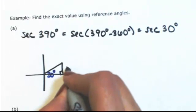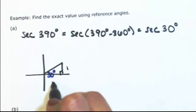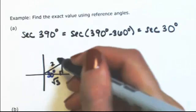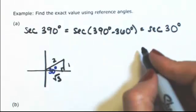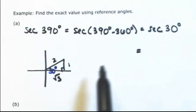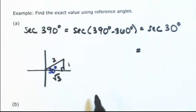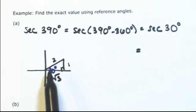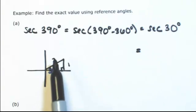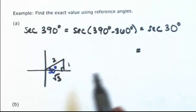So that means that the opposite is 1, the adjacent is square root of 3, hypotenuse is 2. So then the secant of 30 degrees, which is the same thing as the secant of 390 degrees, the reciprocal of cosine. If cosine is adjacent over hypotenuse, then secant is hypotenuse over adjacent.